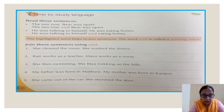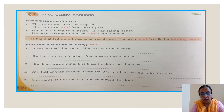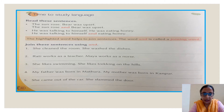Let's read the next example: he was talking to himself. He was eating honey. Now with the joining word: he was talking to himself and eating honey. So we added the joining word and in both of these sentences. The highlighted word helps to join sentences — and is the highlighted word, and it helps to join two sentences. The word and is called a joining word.